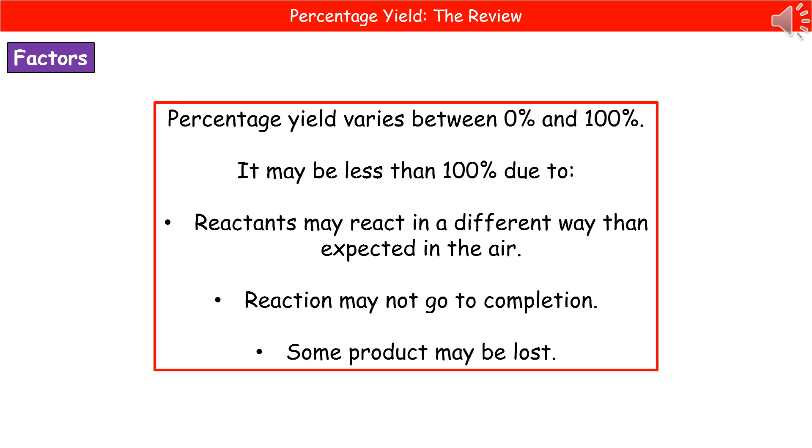They sometimes have a follow-up question in the exam to ask you about why your percentage yield is less than 100%. And there's a few reasons for this. Firstly, the reactants may react in a different way than we expected in air. Secondly, the reaction may not go to completion, so some of our actual products may not be formed because there's still some reactants left over.